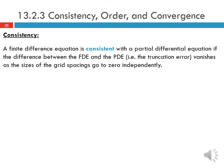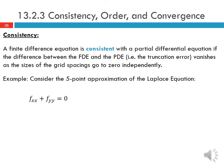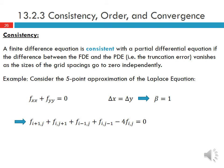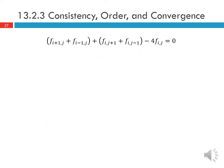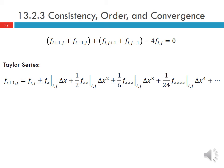First, consistency: a finite difference equation is consistent with the PDE if the difference between the FDE and the original PDE — the truncation error — vanishes as the size of the grid spacings go to zero independently. For the five-point approximation of the Laplace equation with delta x = delta y (beta = 1), we can rearrange the approximation and perform a Taylor series expansion for the (i+1) and (i-1) terms, and similarly for the (j+1) and (j-1) terms, writing both in one equation using plus/minus notation.